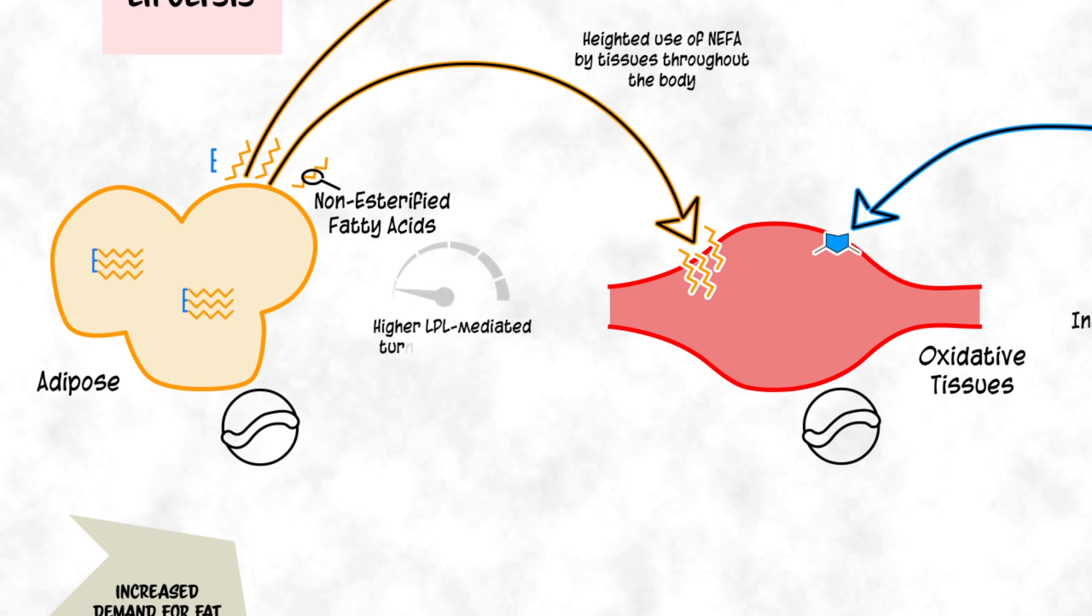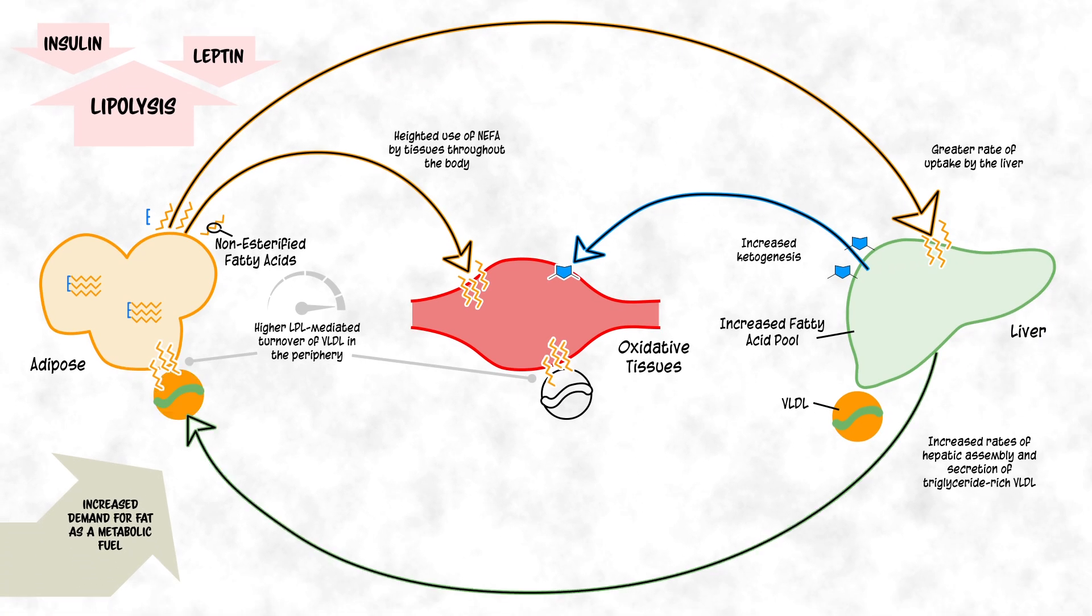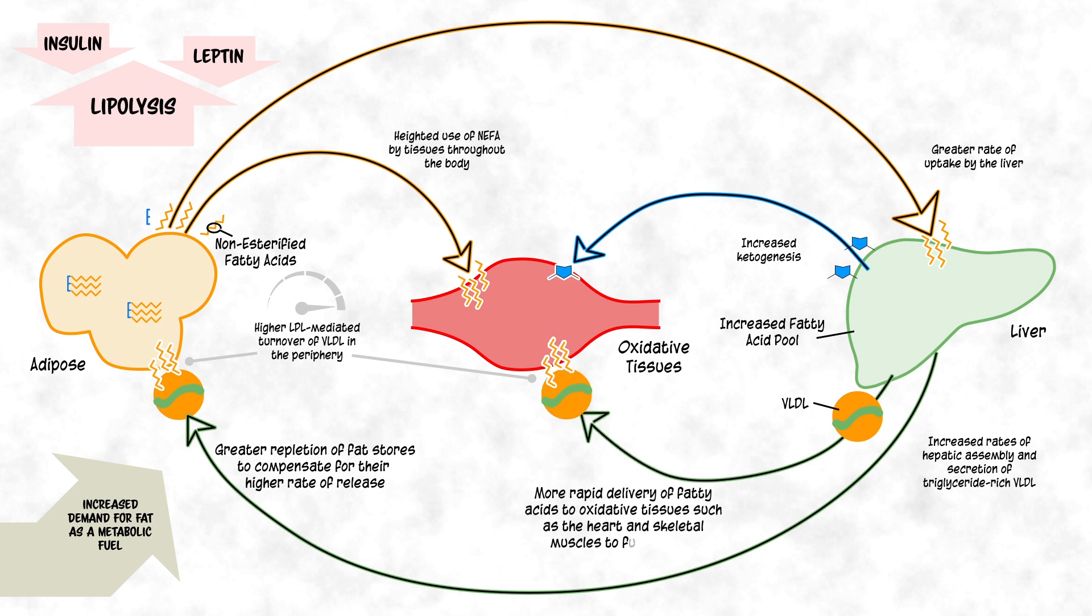Importantly, this increased VLDL secretion is coupled with increased rates of their turnover by lipoprotein lipase in the periphery. This provides both greater repletion of fat stores to compensate for their higher rate of release and more rapid delivery of fatty acids to oxidative tissues, such as the heart and skeletal muscles, to fuel activity.